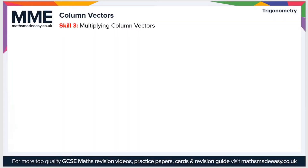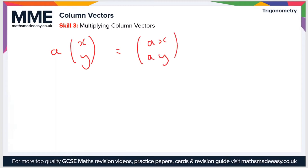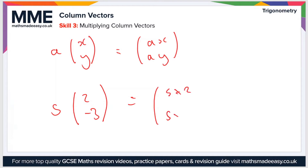So the final skill is multiplying column vectors by a number. This generates a scalar multiple of the vector. So if we have a number a and the vector (x, y), then the new vector becomes (ax, ay). For example, if a was 5 and we had the vector (2, -3), then the new vector would be 5 times 2 and 5 times -3, which we could write as (10, -15).